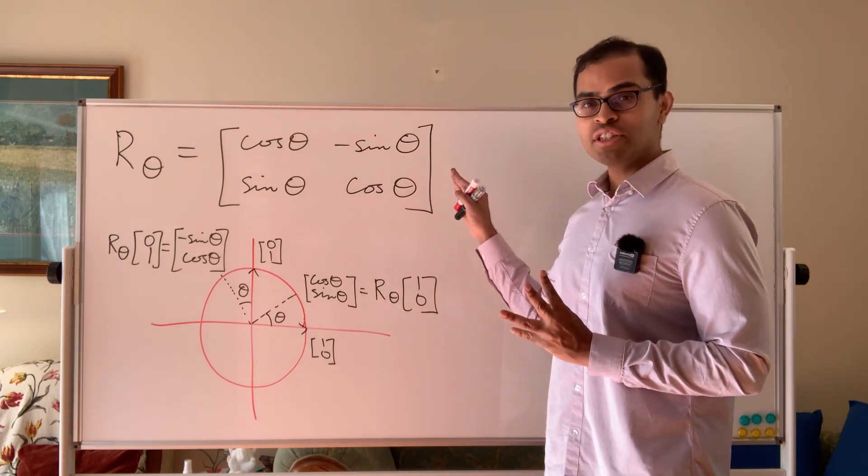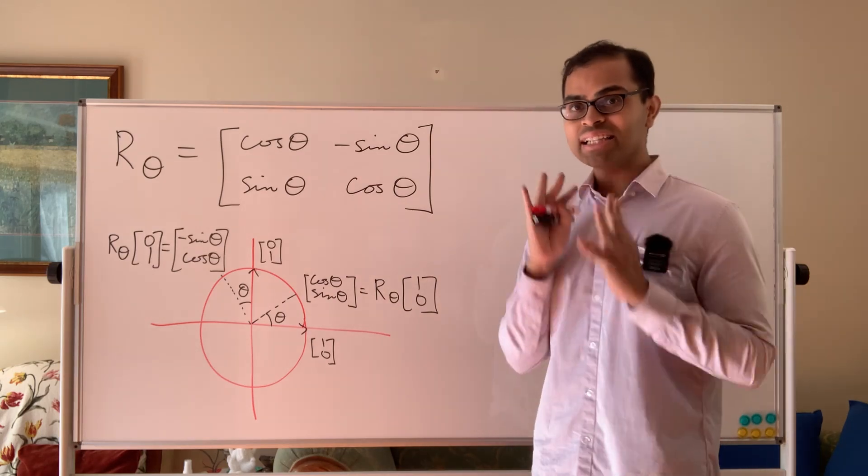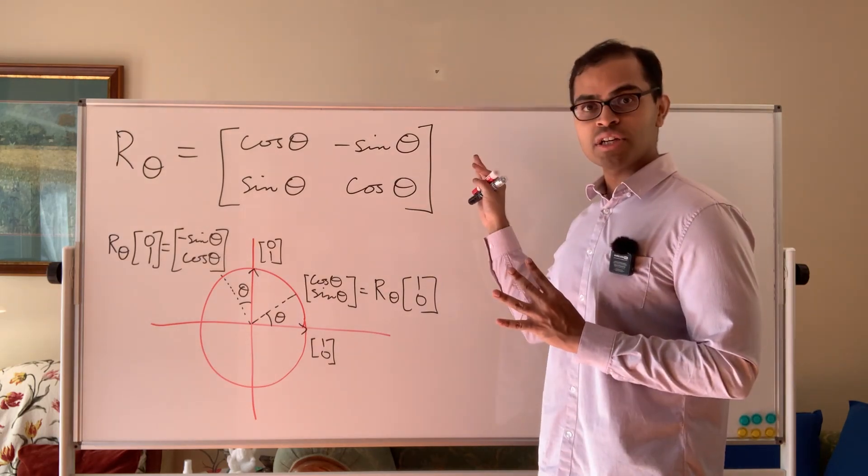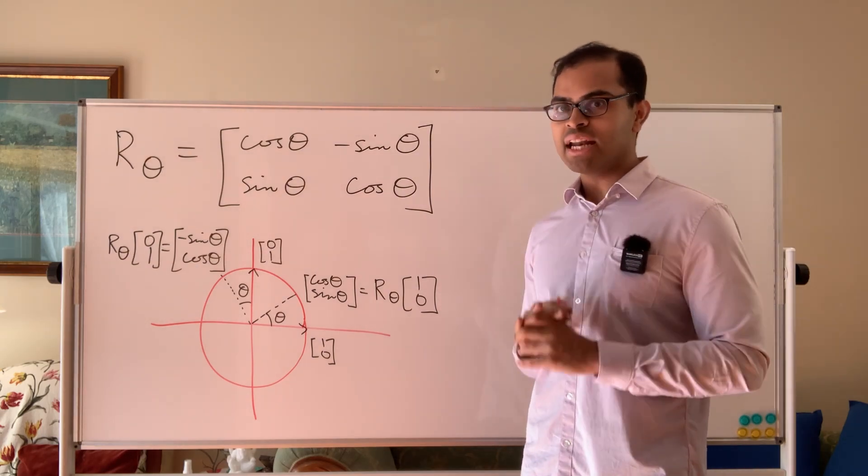So here we have the 2x2 matrix of a rotation. Check out my video on my channel where I explain very rigorously and clearly how to derive this matrix. But I'm going to summarize that video here, and I encourage you to check it out after watching this one to really understand it.